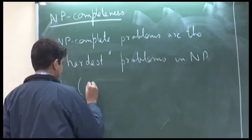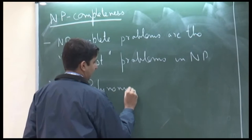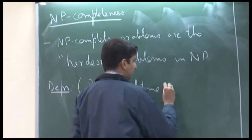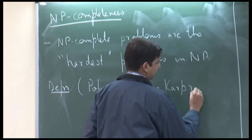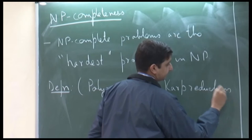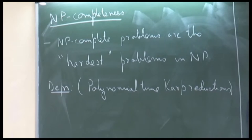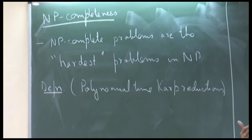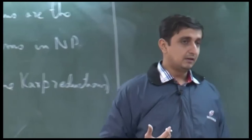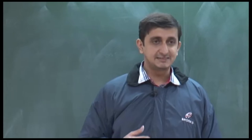We will see what are known as polynomial-time Karp reductions. The book uses this term 'polynomial-time Karp reductions' to denote these reductions, but in other texts you might find terms like 'polynomial-time many-one reduction' or just 'polynomial-time reductions,' and they typically mean the same thing.